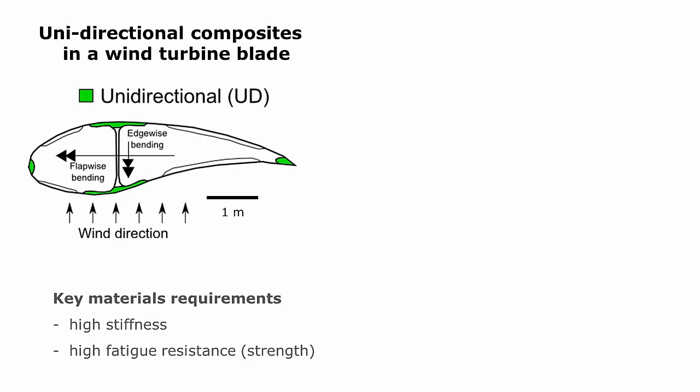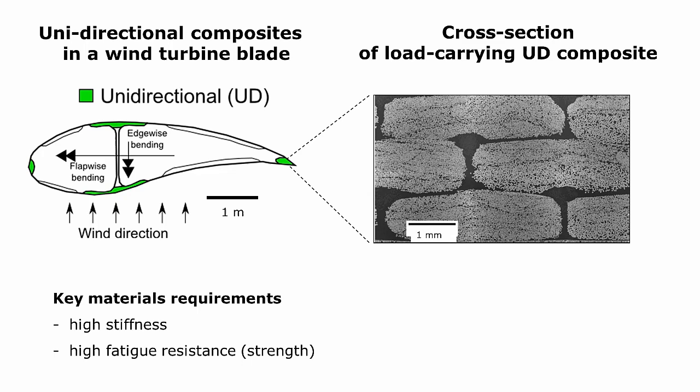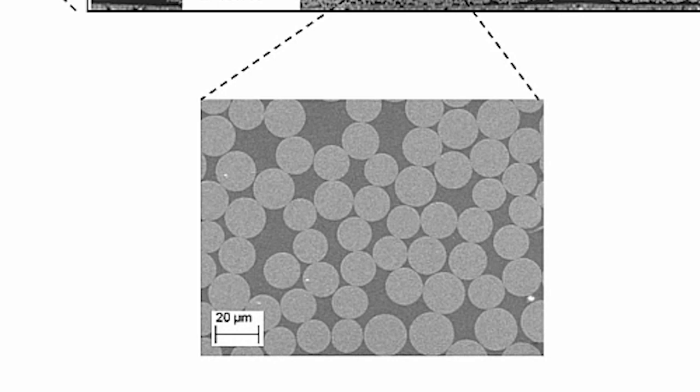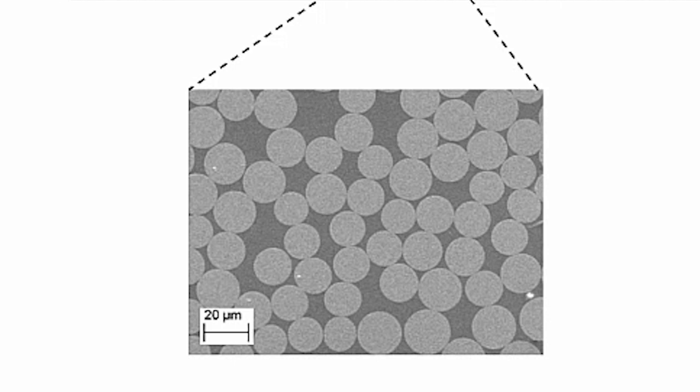The requirement for the material is high stiffness in order to avoid bending of the blade, and high fatigue resistance. If we take a close look into the material inside the blade, we can see that the unidirectional composite is built up of fiber bundles consisting of thousands to tens of thousands of fibers. The fibers normally have a diameter between 10 to 20 micrometers for glass fiber, or between 5 and 10 micrometers for carbon fiber.